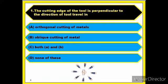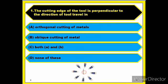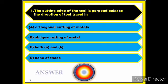Question number one: the cutting edge of the tool is perpendicular to the direction of tool travel. Answer: orthogonal cutting of metals.